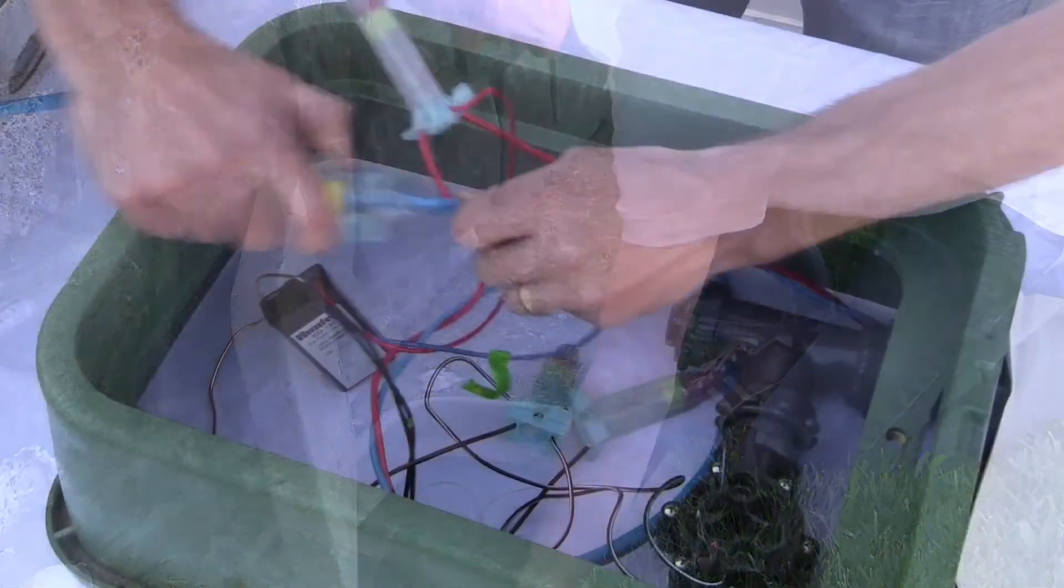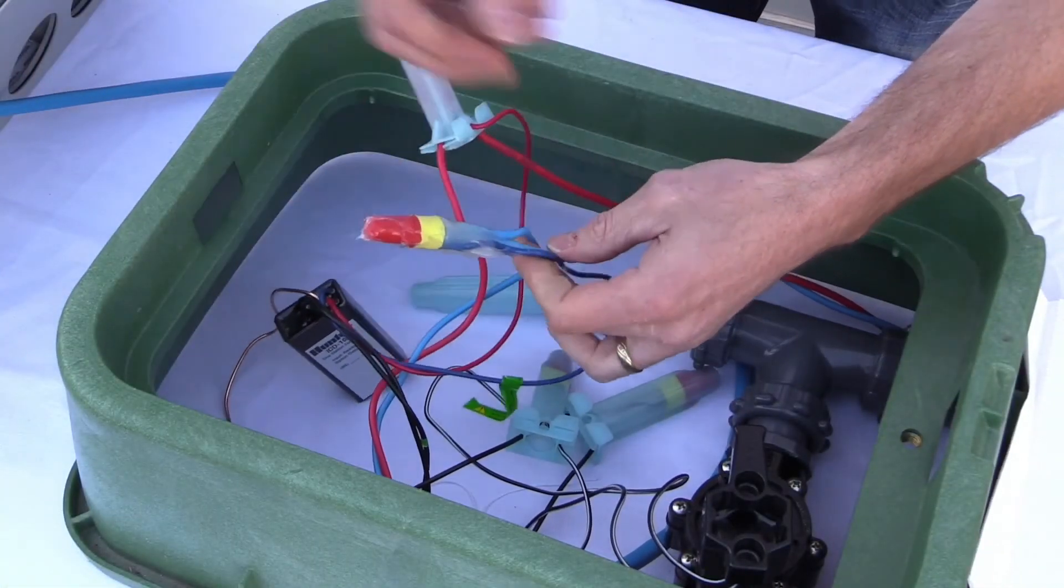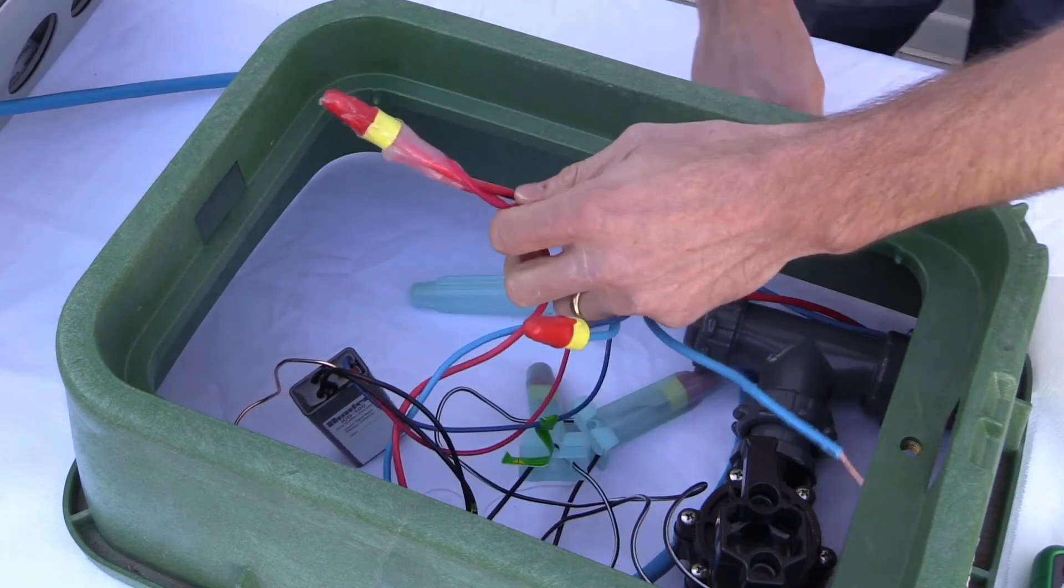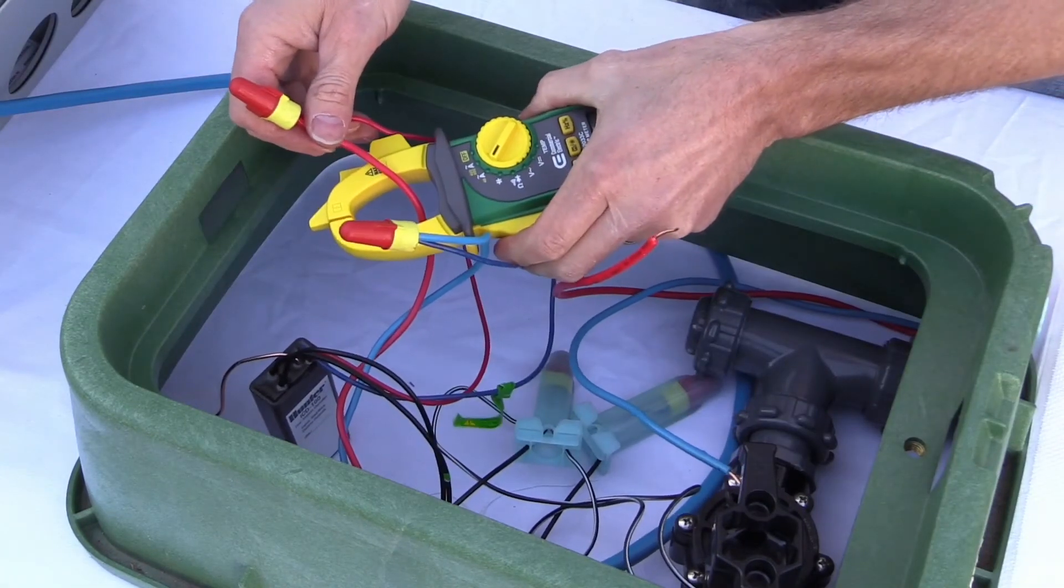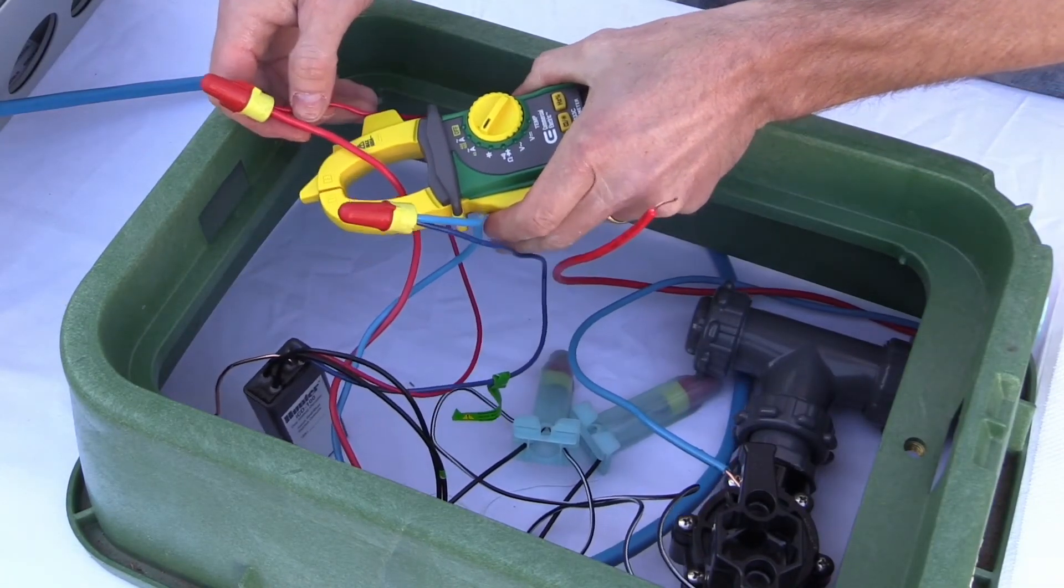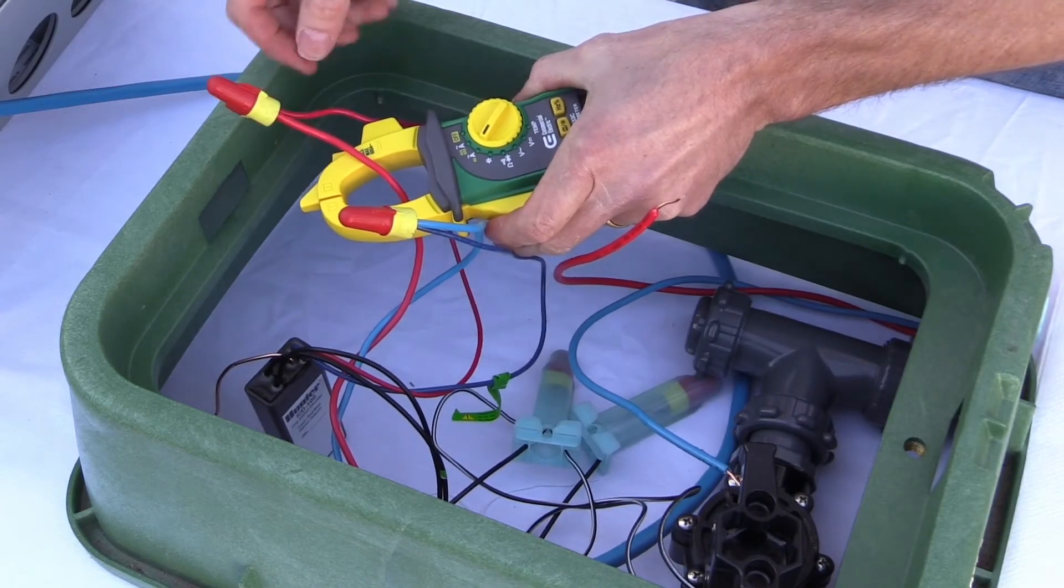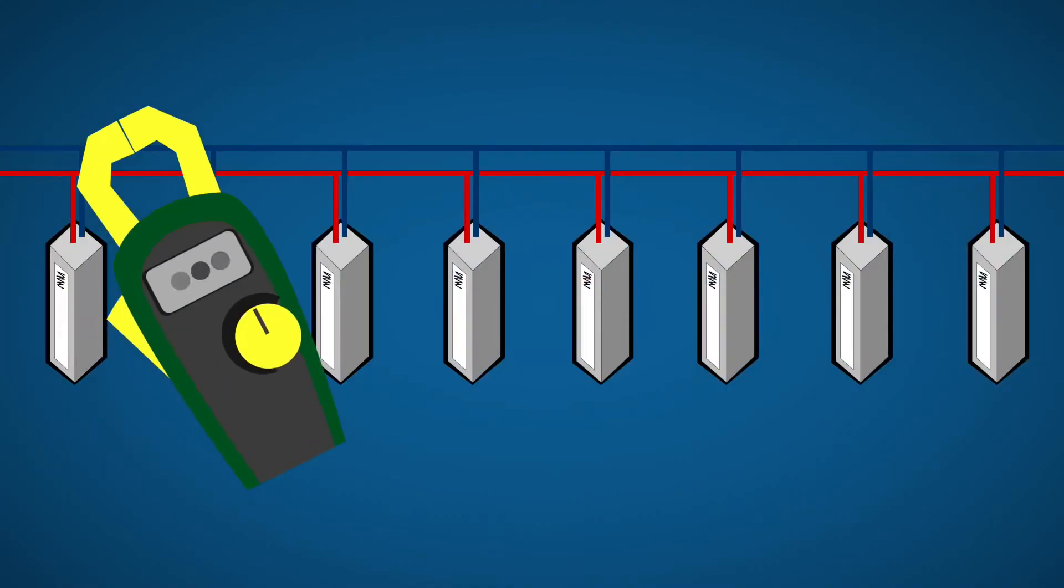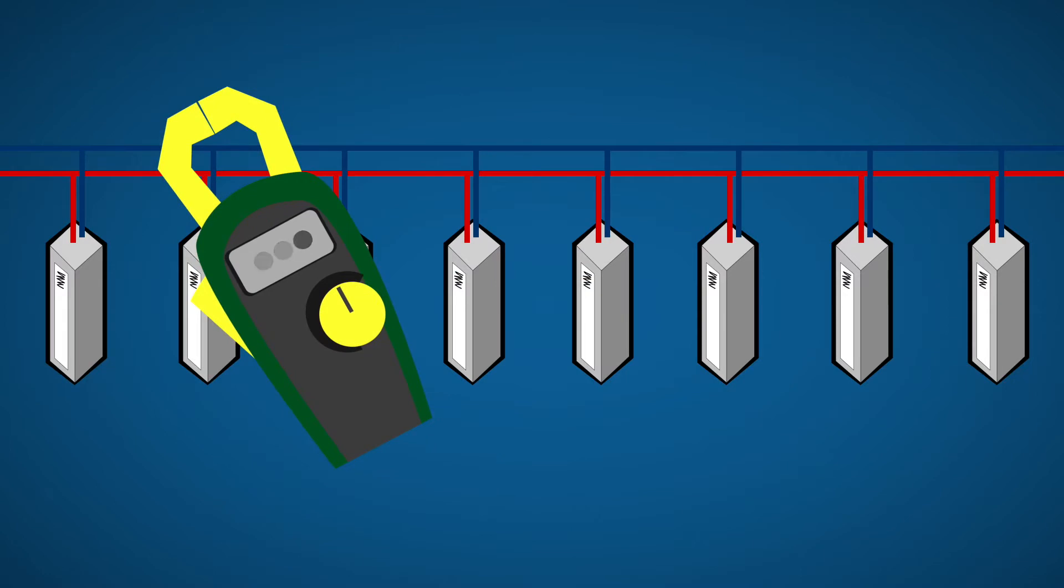Once you know what leg to work on, go halfway down the cable path and disconnect the second half. Test again to see if the short is resolved and is therefore isolated to the section you've disconnected. If it has, then you know where to focus further testing and disconnecting.